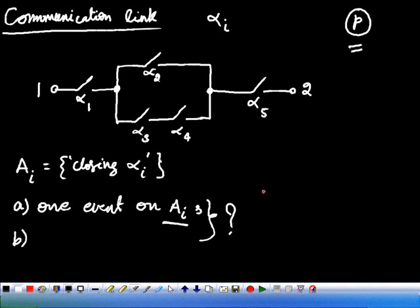First, write down the events. We have A1 intersection A2 intersection A5. So when this event occurs, let it be E1. Let it be the event E1. When event 1 occurs, there exists a closed path between 1 and 2.